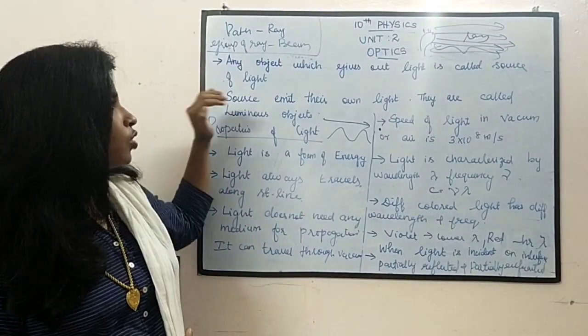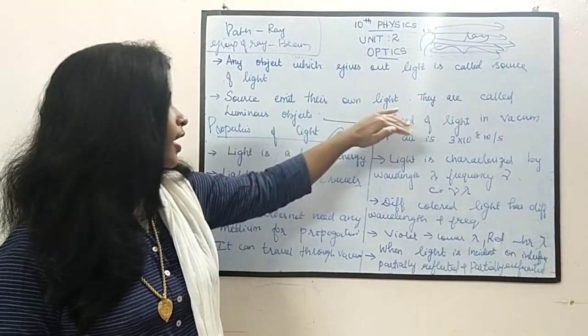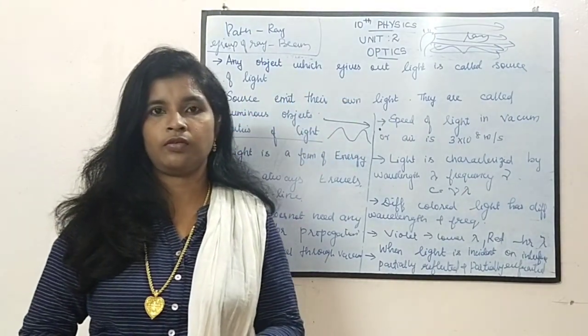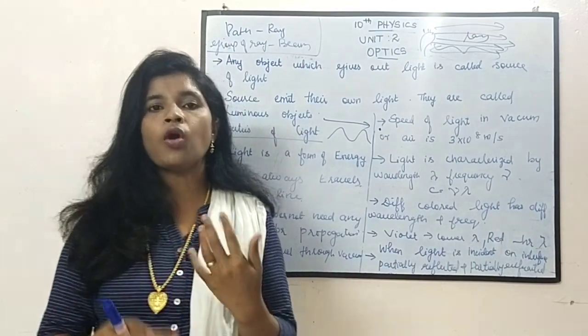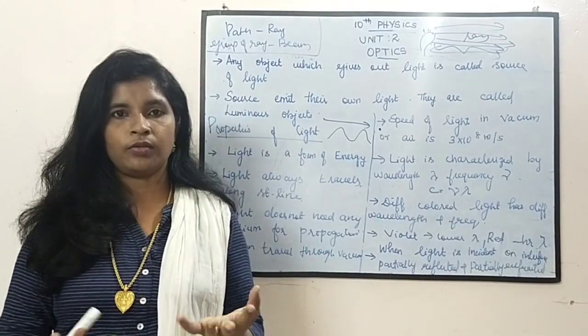Some sources emit their own light — they are called as luminous objects. Some objects will emit their own light.